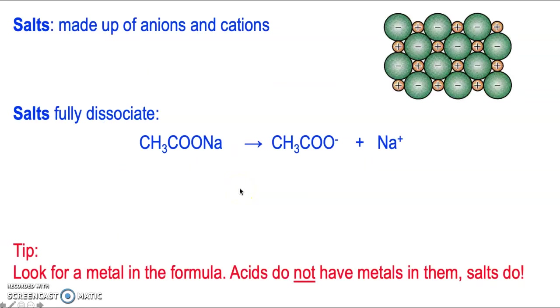So the take-home message at this point is salts are made up of anions and cations. So you want to be looking at the formula and seeing if you can recognize the metal cation. That will be your tell-tale sign that you've got a salt. The next take-home message is salts fully dissociate. So your first equation will always be one where you have the straightforward arrow showing full dissociation. And it will break up into the cations and anions. It doesn't matter which order you write those on the product side.